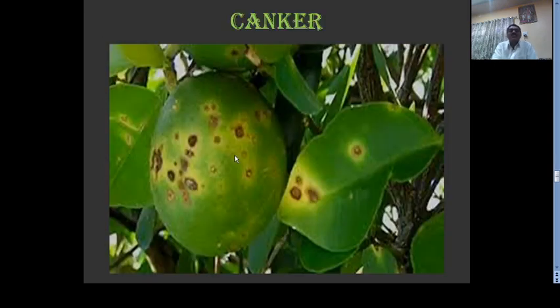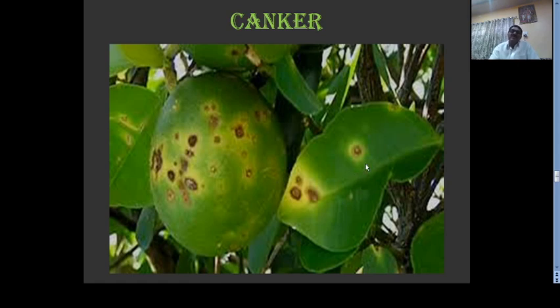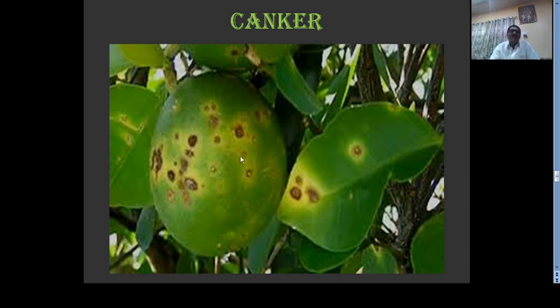This is a canker — citrus canker. See, this is the infection on the fruits. Corky lesions are produced on the aerial parts of the plants — stem, leaf, and fruit. In the primary stages, the lesions are surrounded by pale yellow color on the upper surface of the leaves. When the disease intensity increases, these spots coalesce and corky patches are produced on the fruits. Due to such diseases, the market value of the fruit is decreased.